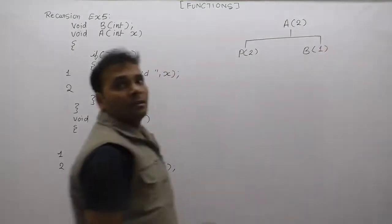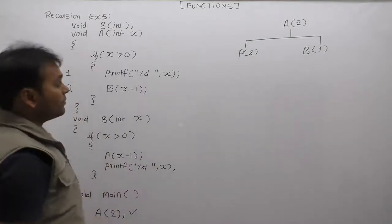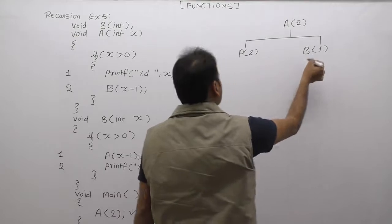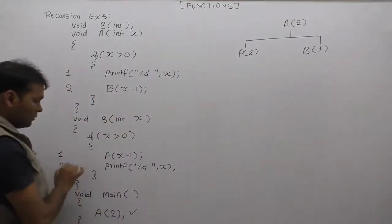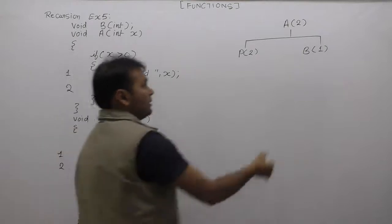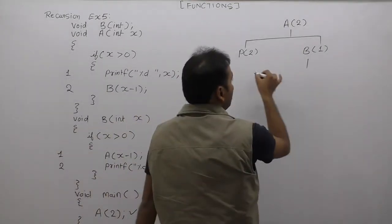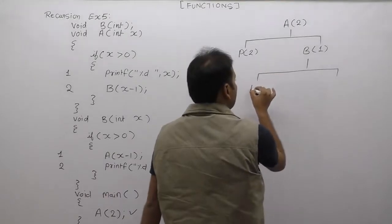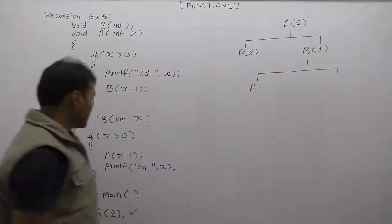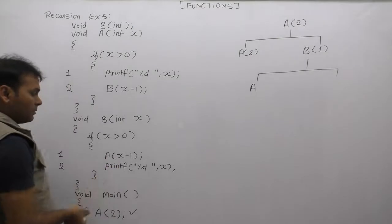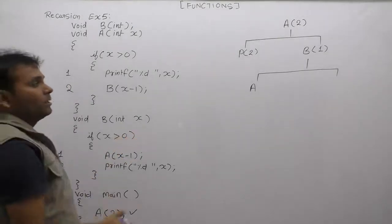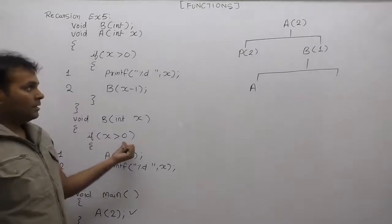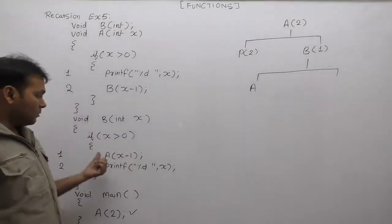Next, again B is called. For B, we need to process the statements 1-2. Again calling A, B itself. First case: process calling function A. For A, passing x minus 1. x value passed is 1. x value 1, condition is 1 greater than 0.